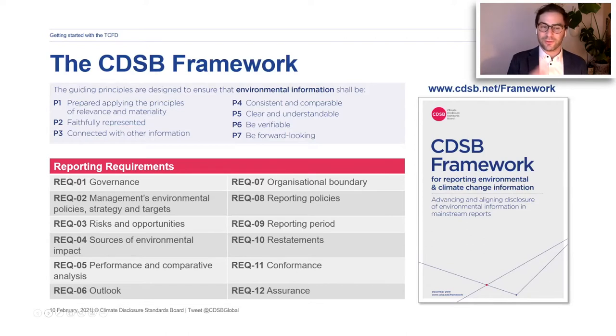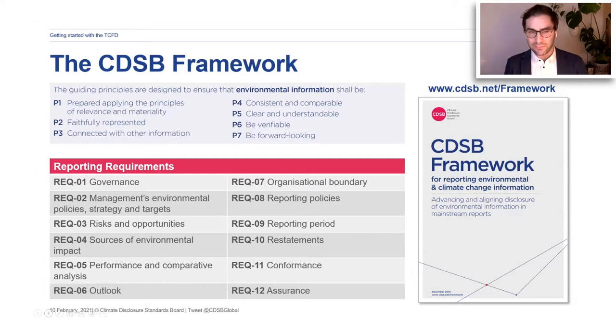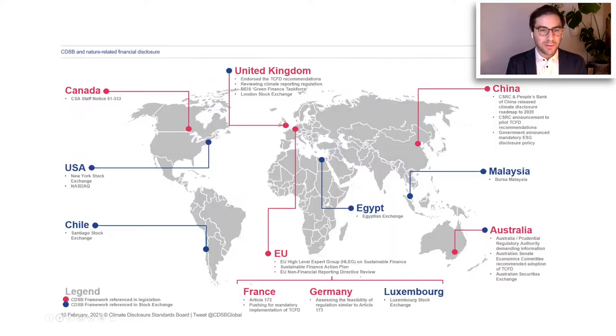The framework also has 12 requirements on what to report, linking back to existing reporting standards in climate change reporting that companies are already using. For example, if you're reporting to CDP, you already have the information needed — you just need to apply the framework to understand what is material in the context of your annual reporting and how to make it work best within the annual report.